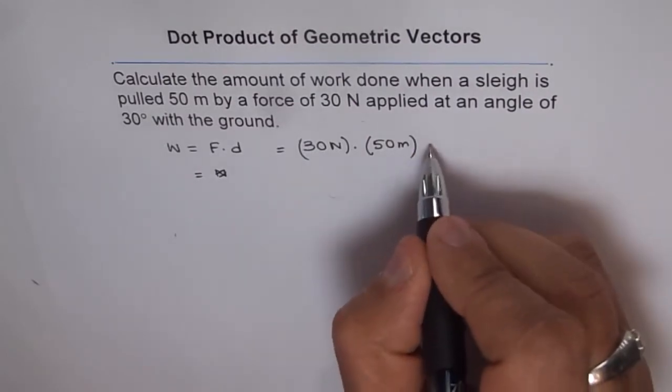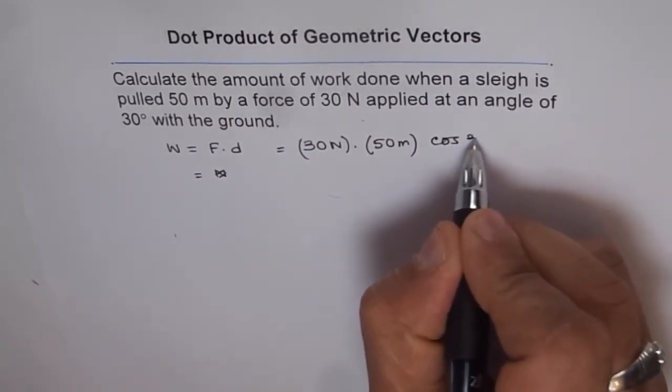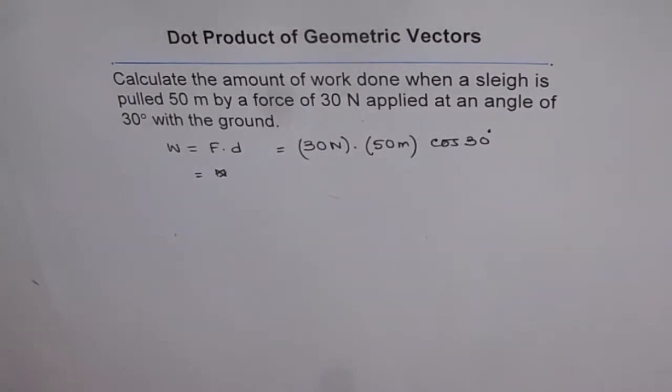where theta is the angle between the two vectors. So this is F dot D equals 30 times 50 times cos 30 degrees. You can use your calculator to find the answer.